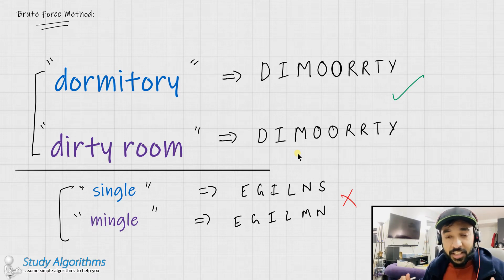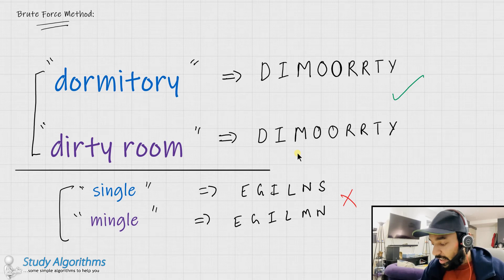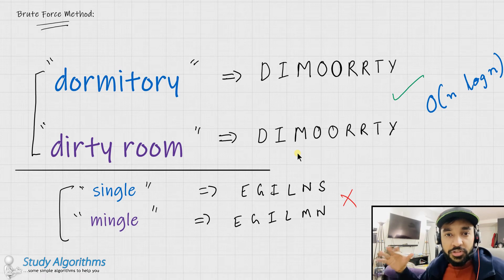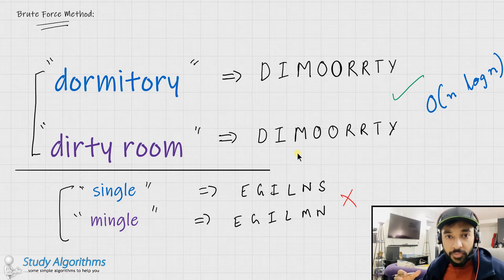But, the problem with this solution is that the fastest sorting algorithm that we know is quicksort and even quicksort runs in the time of order n log n. Now, this algorithm is fast. But, in cases where you have tremendous huge strings to compare, then even an order of n log n would result in slowness. And so, we need to find a better approach to solve this.